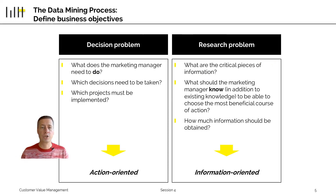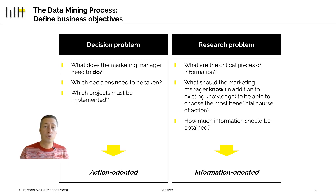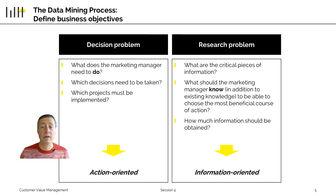The first big challenge has nothing to do with statistics. The first big challenge is asking the right question. There is you who has a decision problem — you need to take some form of decision or implement some form of project. Let's assume, for example, you want to introduce a new product. In order to take the action you are supposed to take, you need to know some pieces of information. The first decision is: what are the critical pieces of information that you need?